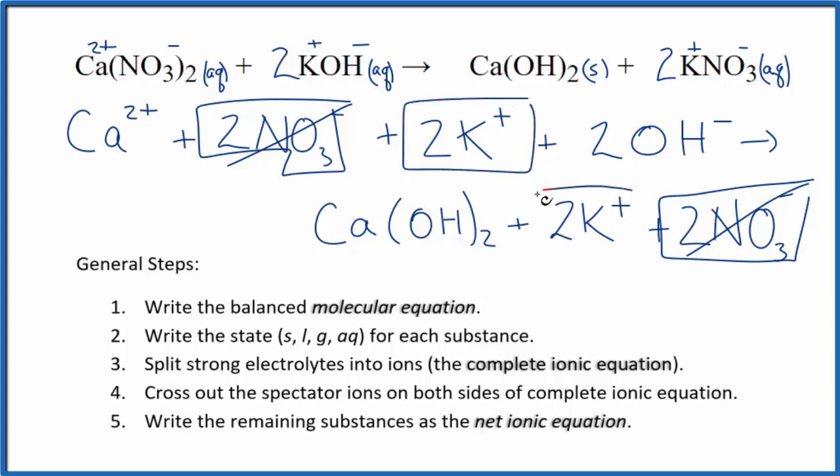2 potassium ions. And again, in the products, we're going to cross those out. What's left, that's the net ionic equation for Ca(NO3)2 plus KOH.